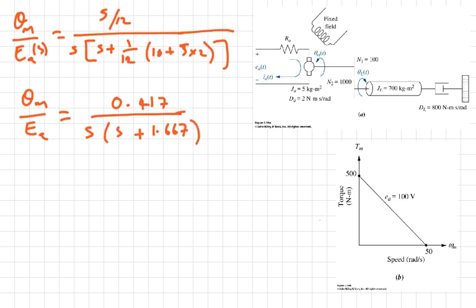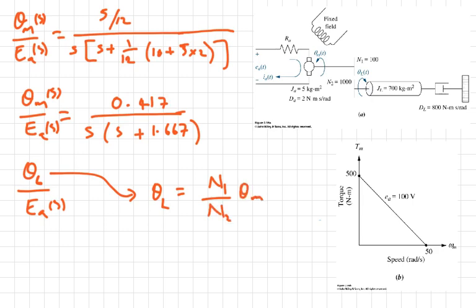So in order to find this, we need to use the gear ratio. We know that θ_L equals N_1 over N_2 times θ_M. So θ_L will equal θ_M over 10, since we know that the gear ratio N_1 over N_2 is 1 over 10.